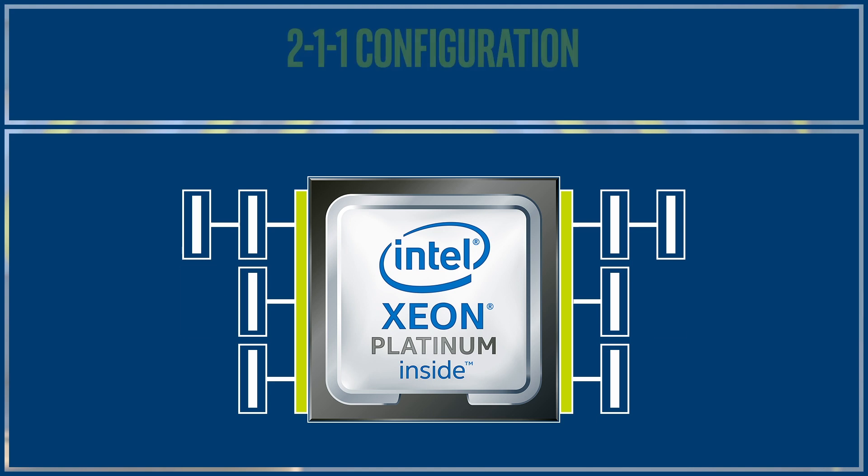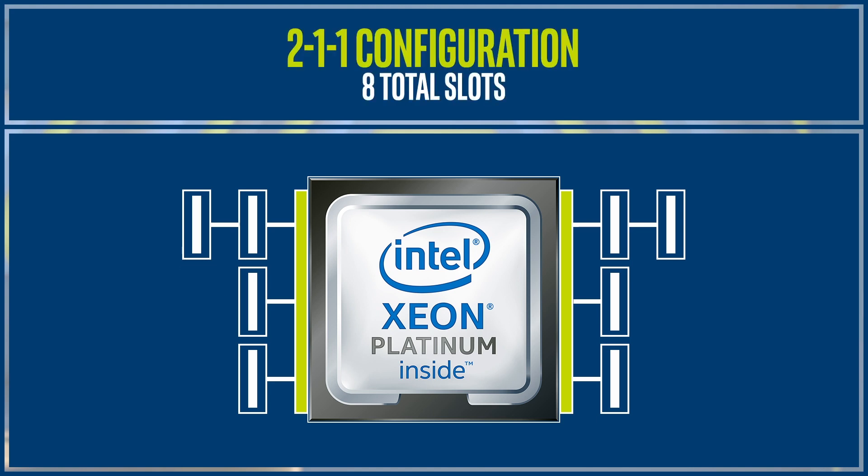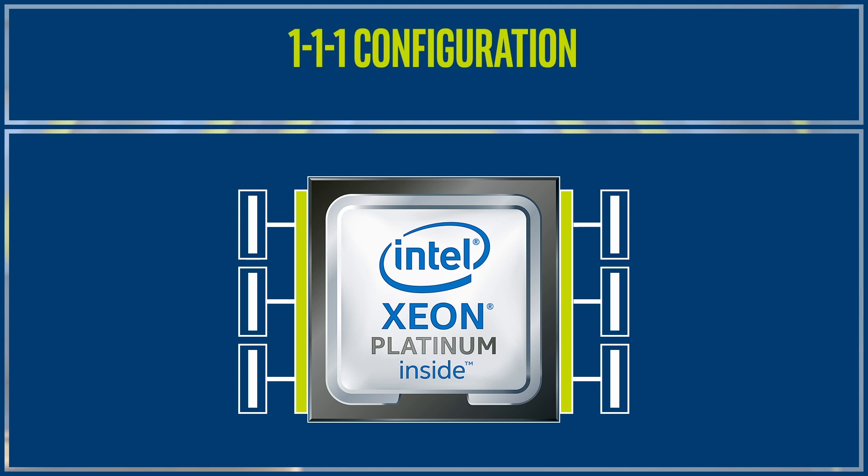Here's a 2-1-1 configuration with eight slots per processor, and finally a 1-1-1 with six total slots. For best performance, you want to maximize the total memory bandwidth and the probability of a DRAM cache hit.